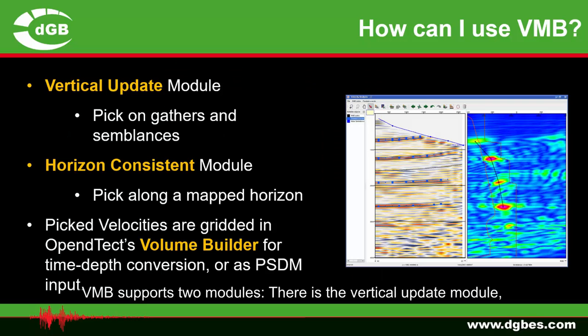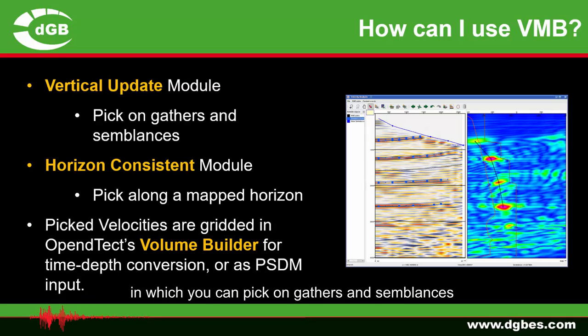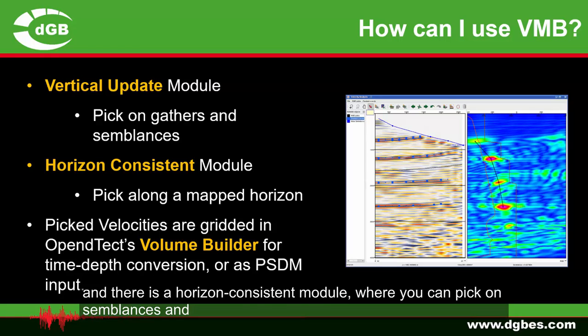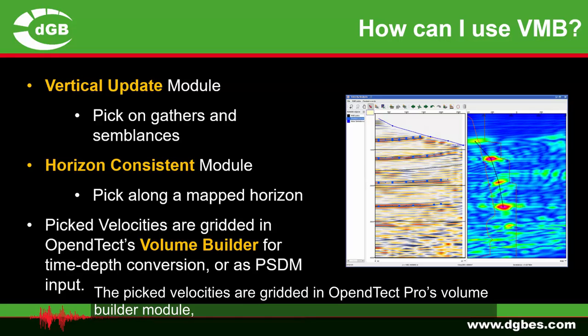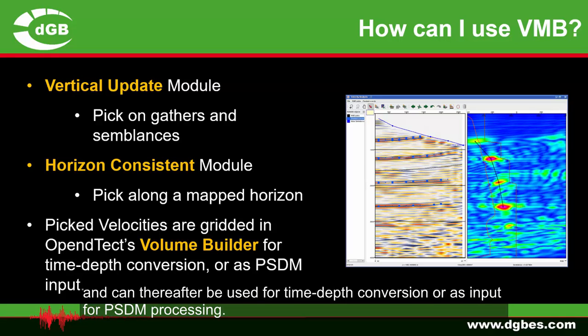VMB supports two modules. There is the Vertical Update module, in which you can pick on gathers and semblances, and there is the Horizon Consistent module, where you can pick on semblances and gathers along a mapped horizon. The picked velocities are gridded in Open Detect Pro's Volume Builder module and can thereafter be used for time-depth conversion or as input for PSDM processing.